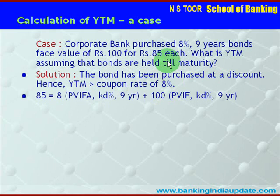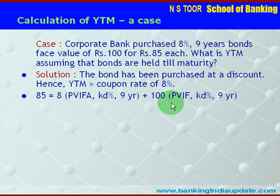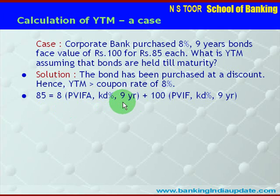The purchase price of Rs. 85 equals the present value of the coupons plus the present value of the face value of the bond to be received at the end of the 9th year. We shall calculate the present value of these two components: the coupon amount using the annuity formula, and the face value using the discounting formula.